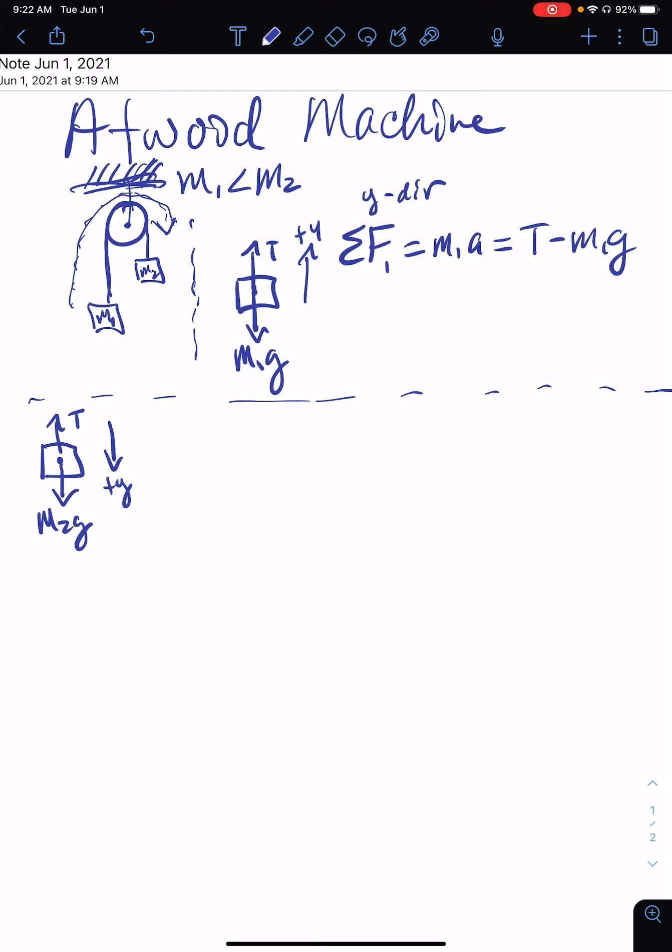It's very important to recognize that since the pulley's mass is so small that it's negligible, since there's no friction in the pulley, since the string is not changing shape in any way, that means that the tension that is being pulled up on m1 is the same as the tension that's being pulled down on m2.